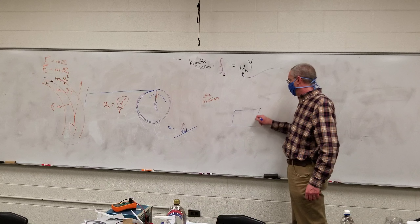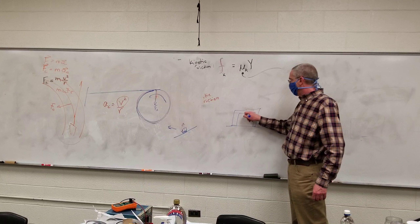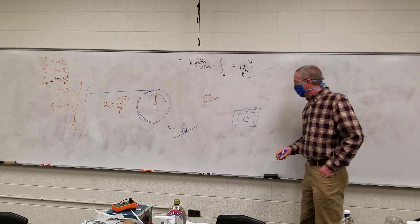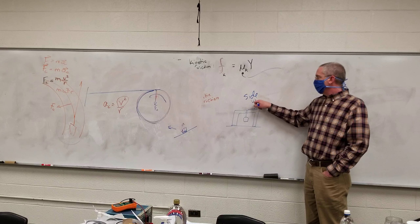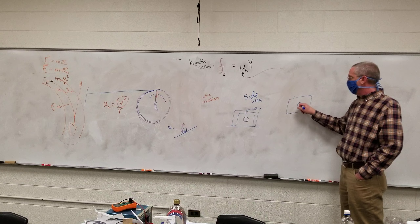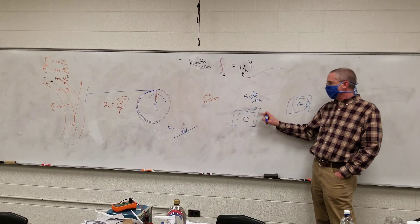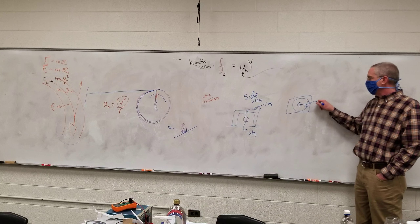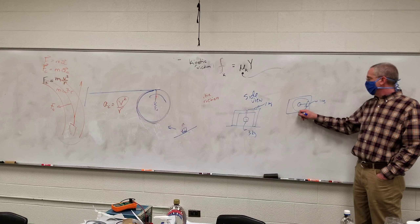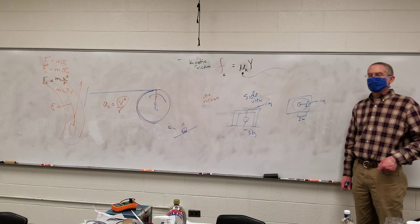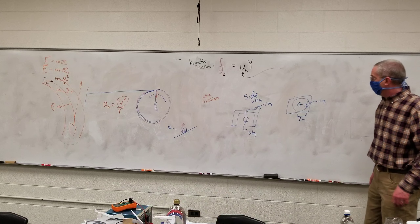Let's do one example. This is a side view and overhead view. I have a mass here — let's make this 3 kilograms — and a 1 kilogram mass traveling in a circle at a radius of 2 meters. That's a really big table.